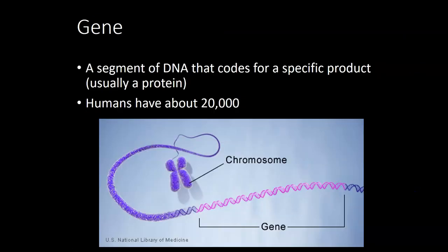A gene is a recipe for how to make one specific product that the cell needs to make. Usually when I talk about genes I say that they code for a protein, but they don't all code for proteins — that's just how most of them work, so that's why I use that as our example.